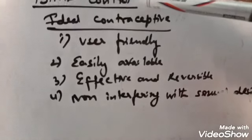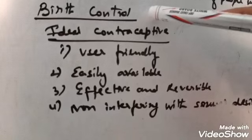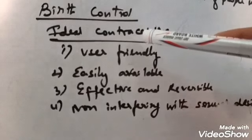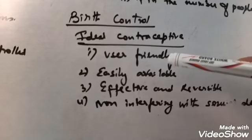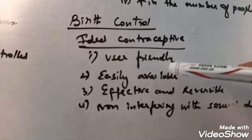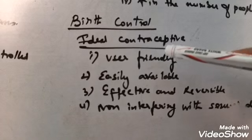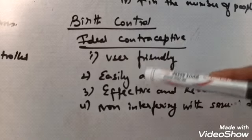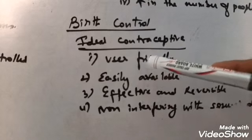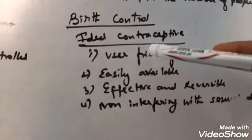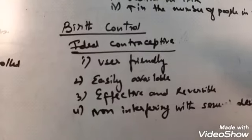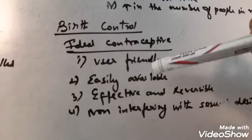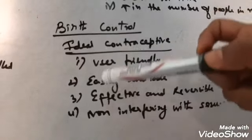Next comes how can we control birth? That is by contraceptive methods. What is contraceptive method? The contraceptive methods are various types of methods that are used to motivate people to have small family sizes. There are some criteria which we can consider for an ideal contraceptive. How can we tell that some contraceptives are ideal? For that, we will learn some points.